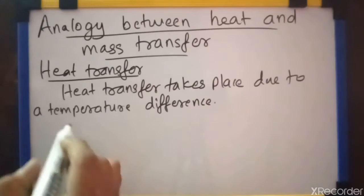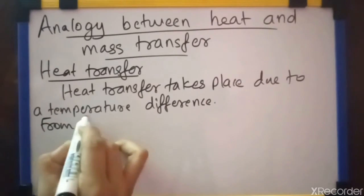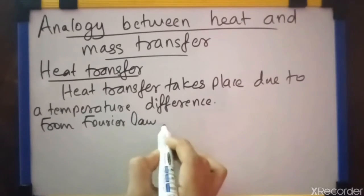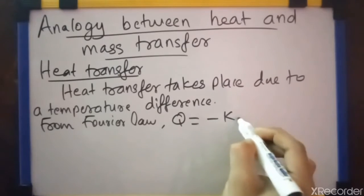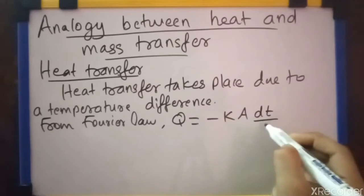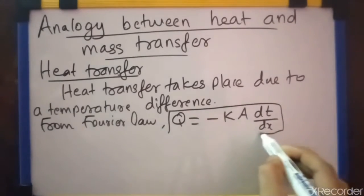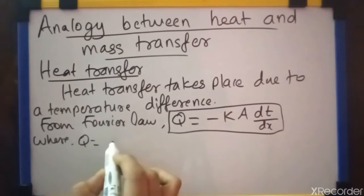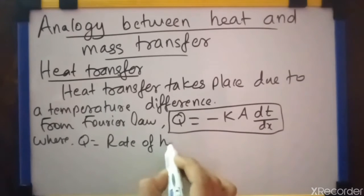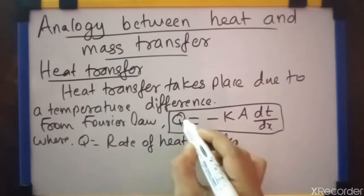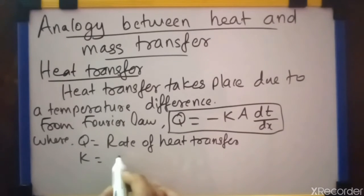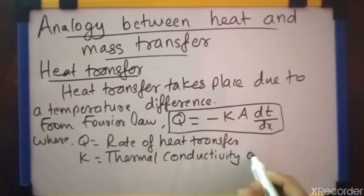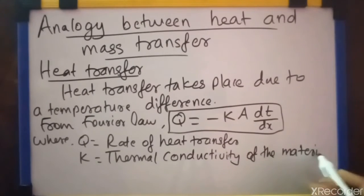In case of conduction, from Fourier law of heat conduction, Q is equal to, heat transfer Q is equal to minus KA dT by dx is the equation for heat transfer by Fourier law, where Q is the rate of heat transfer. K is the thermal conductivity of the material. A is the heat transfer area.